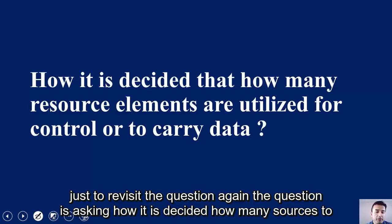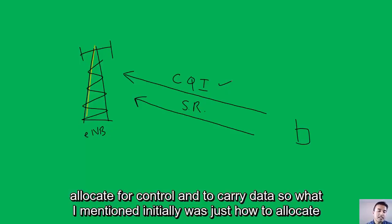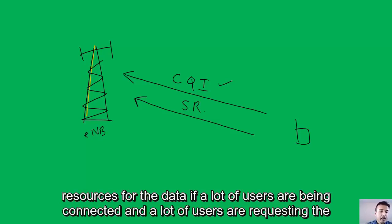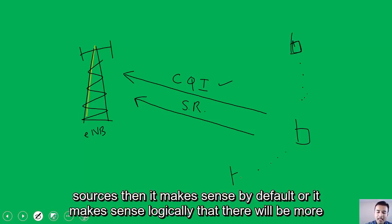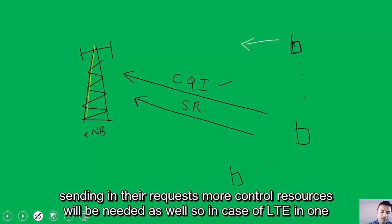Revisiting the question: it asks how it is decided how many resources to allocate for control and to carry data. What I mentioned initially was how to allocate resources for data. If many users are connected and requesting resources, it makes sense logically that more control resources will also be needed in order to accommodate these users, because more users sending requests means more control resources are required.